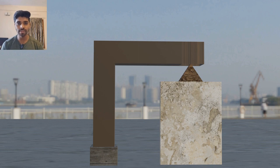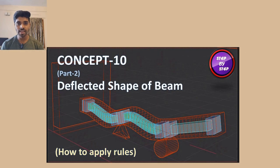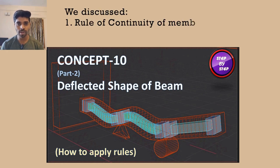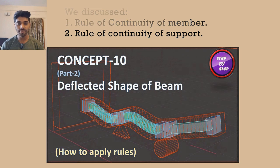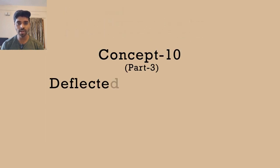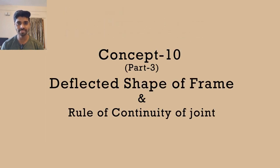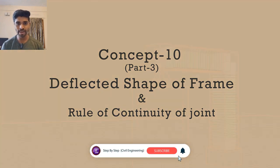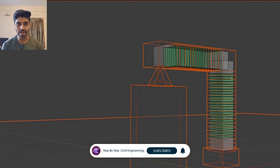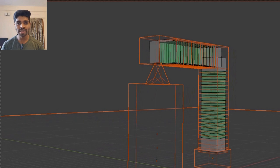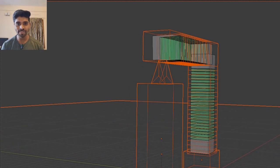Since in parts one and two we covered the concept of how to make a deflected shape for beams, the two major rules implemented were the rule of continuity of member and continuity of support. Today we are going to implement the rule of continuity of joint. Before moving ahead, please hit the like button, subscribe, and press the bell icon.